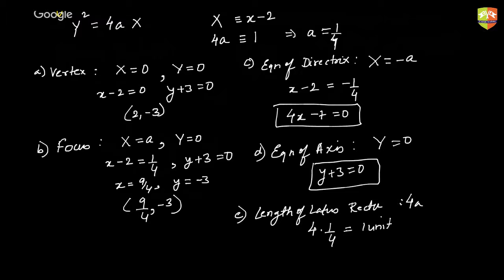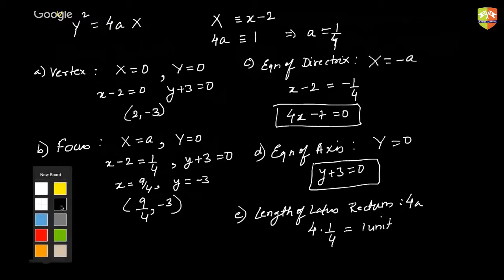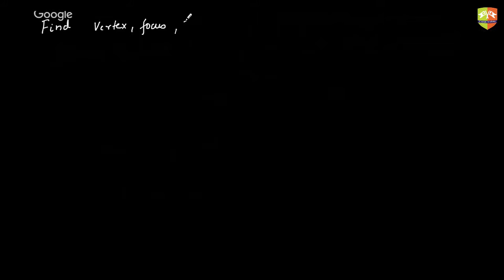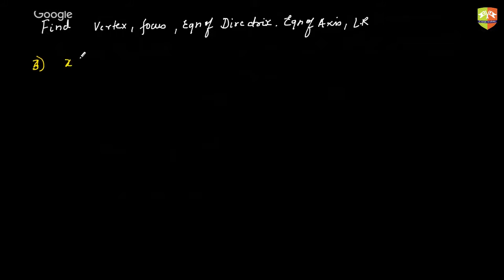So these are the critical points and critical equations for that parabola. Let's take one more — again find vertex, focus, equation of directrix, equation of axis, length of latus rectum. The parabola is: x minus 1, the whole square, is equal to 36 times y plus 3.